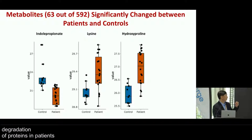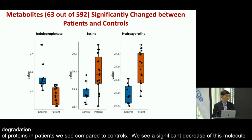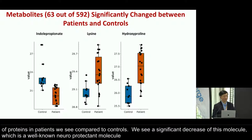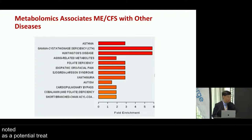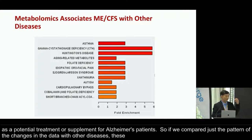We see a significant decrease of indopropionate, which is a well-known neuroprotectant molecule investigated as a potential treatment or supplement for Alzheimer's patients. If we compare just the pattern of metabolomic changes with other diseases, Huntington's disease is among the top matches most similar to the pattern we see in these patients. This can generate hypotheses that would require further testing.